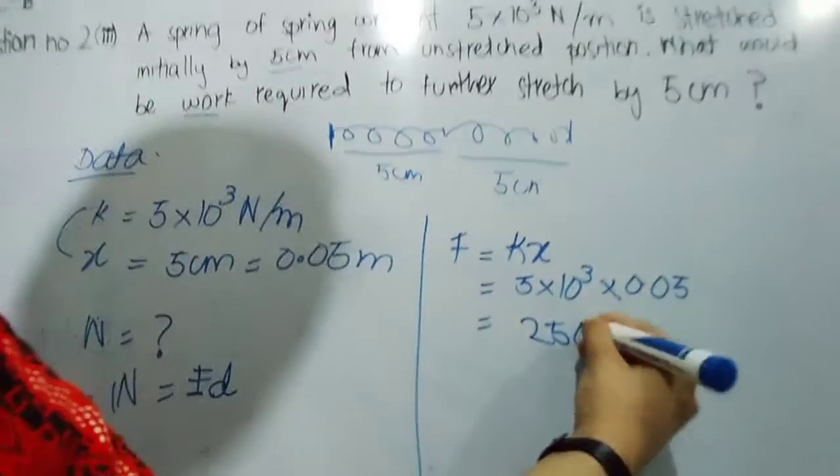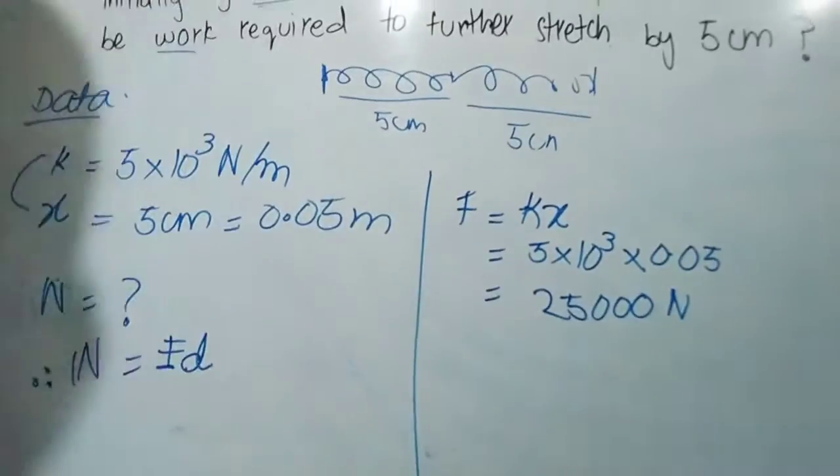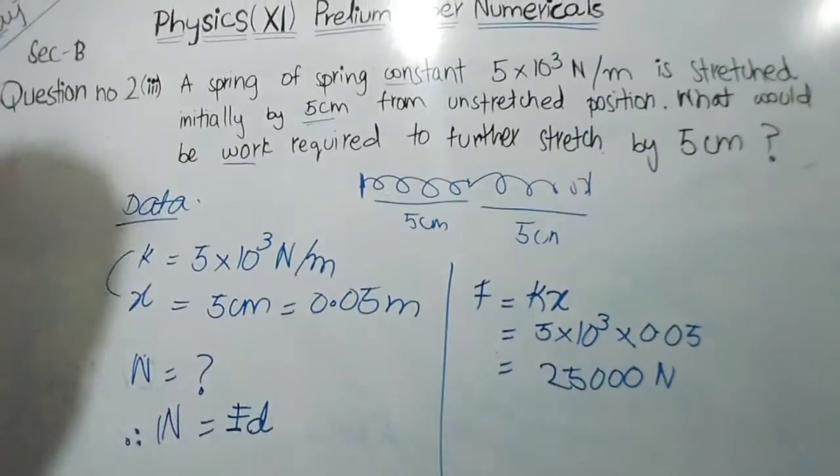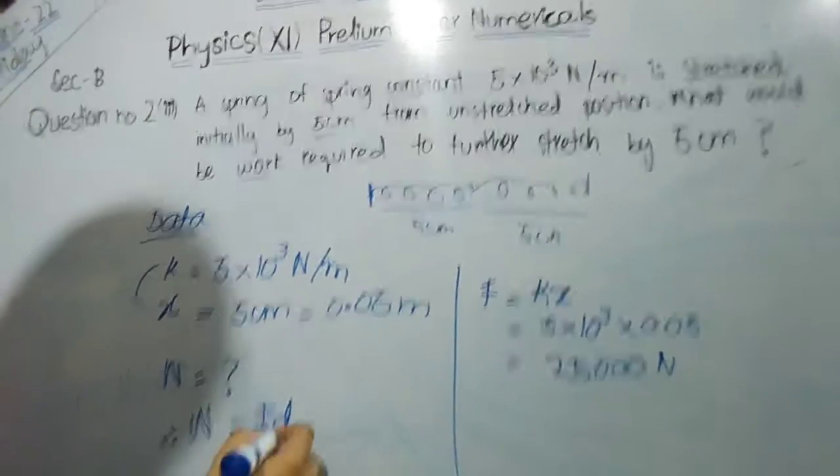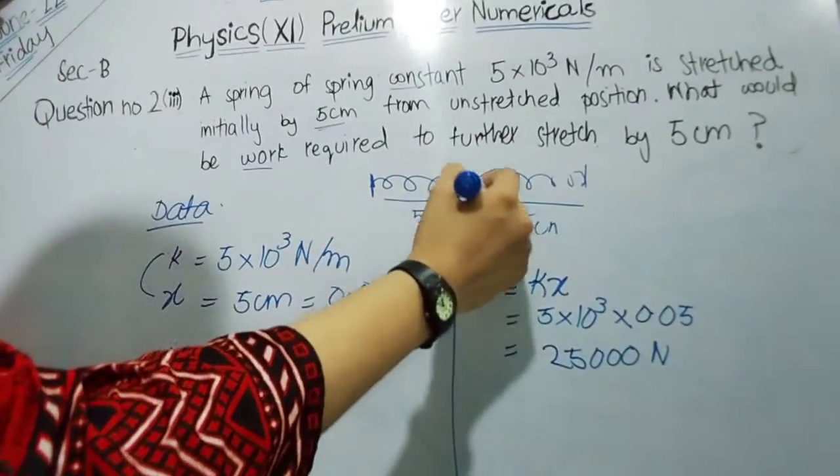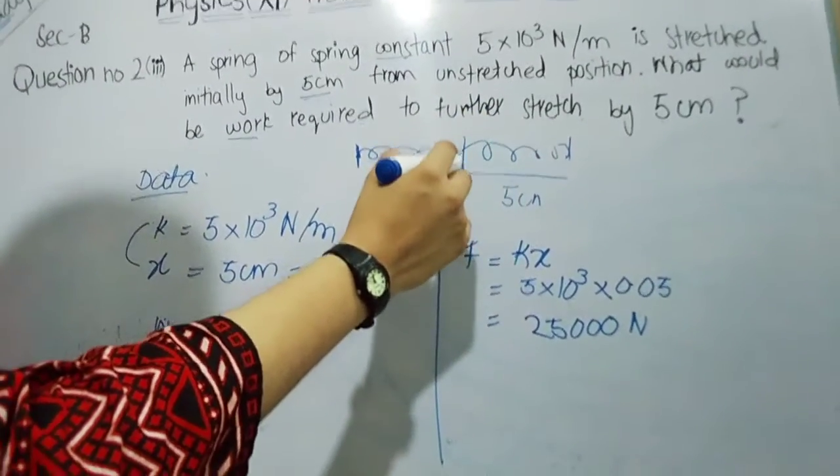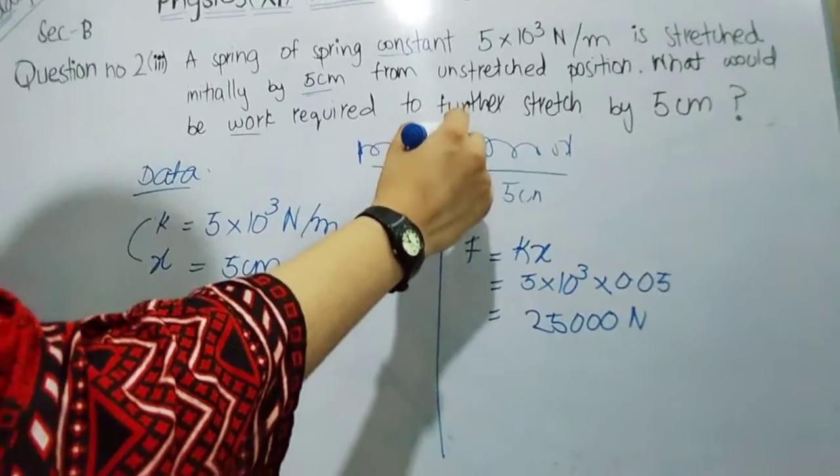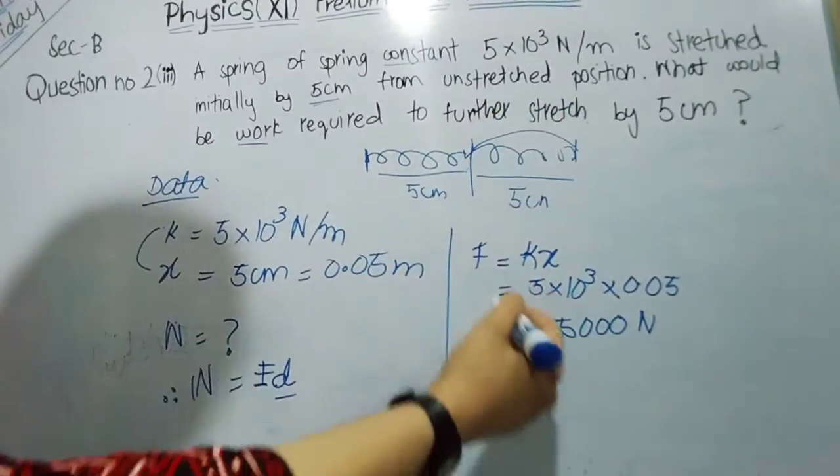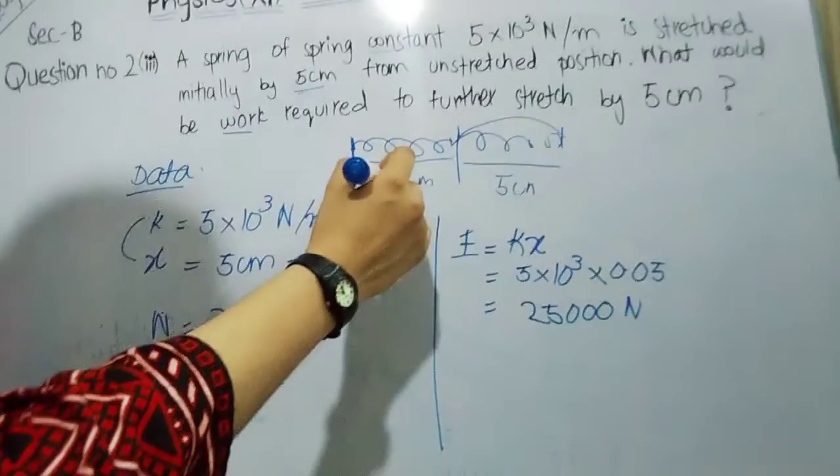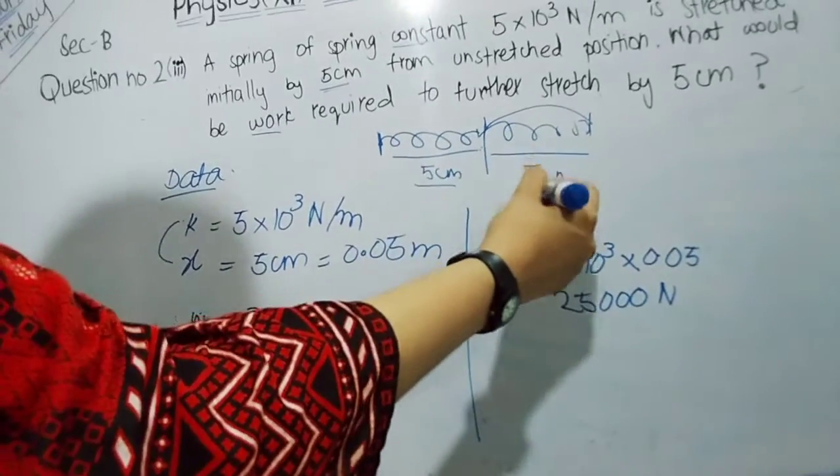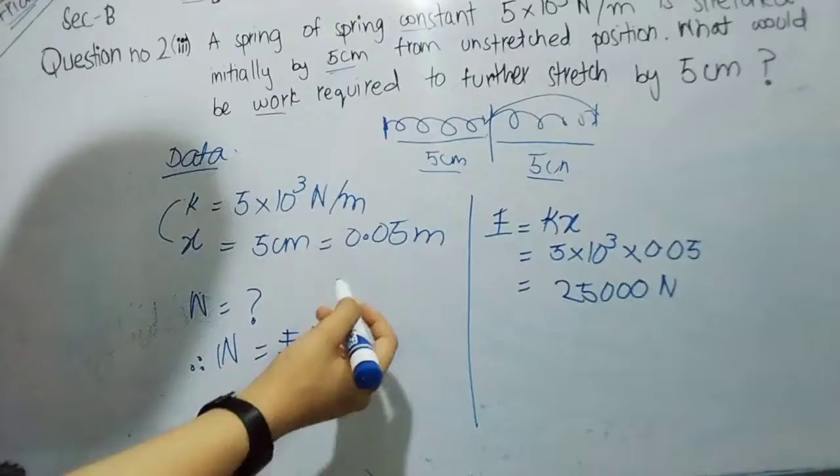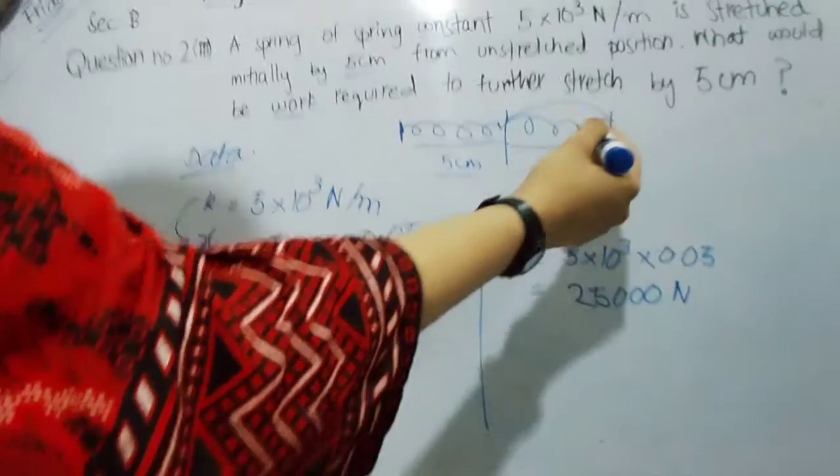It is 25,000 Newton. Now for the additional 0.05 meter distance, we need to calculate the work.